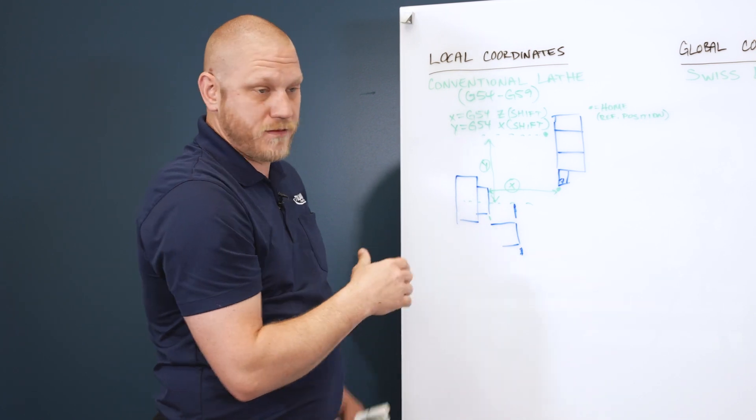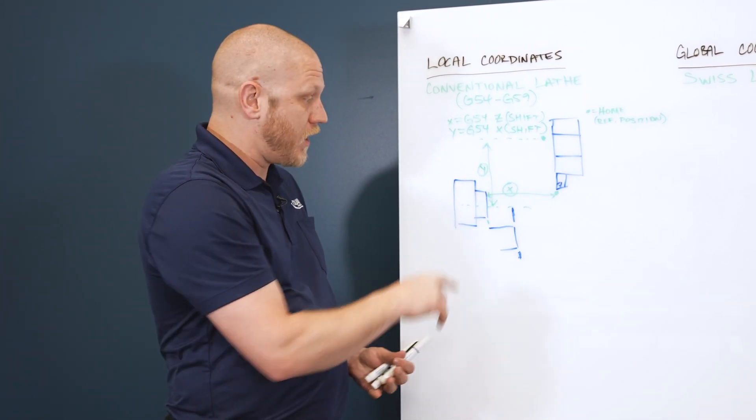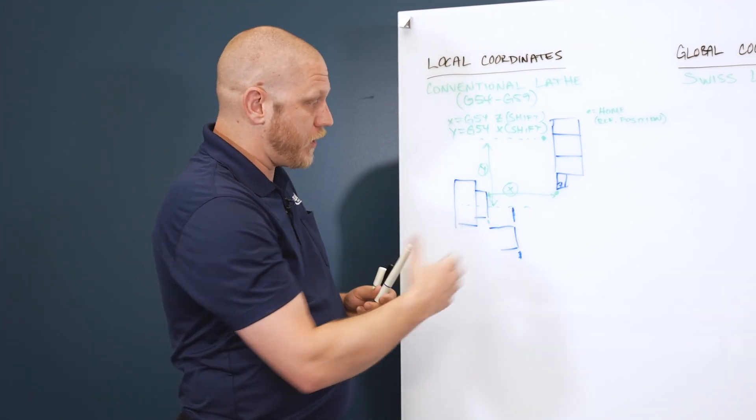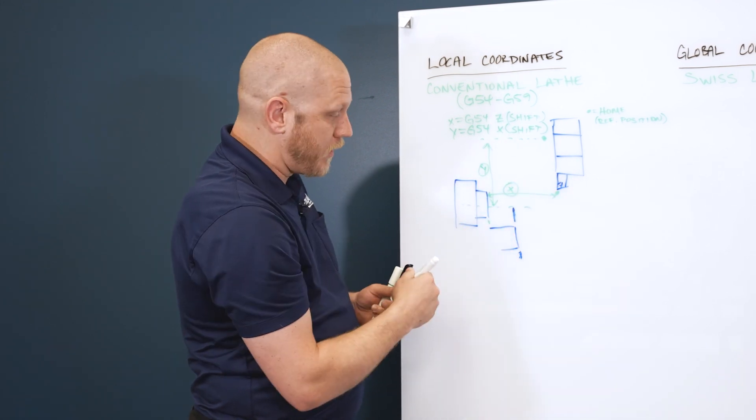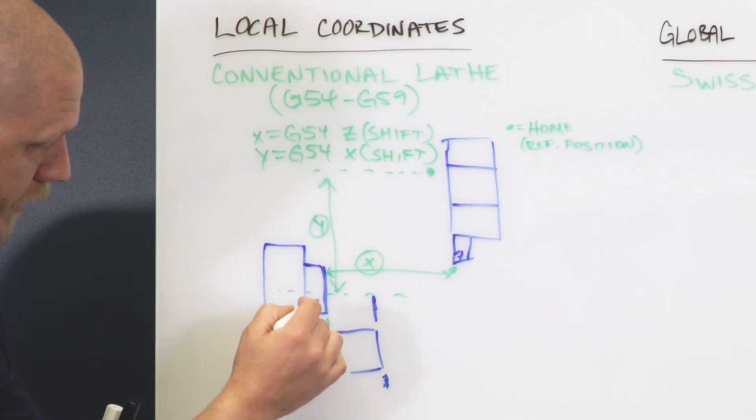So you can do that G55, G56, G57, G58, and G59, all different Z values. So let's say halfway through your part program, you got a longer part, you need to come up and pull the material out to a new location.